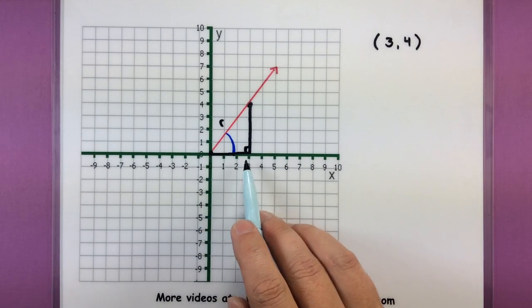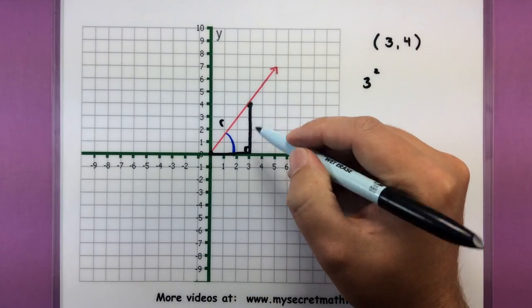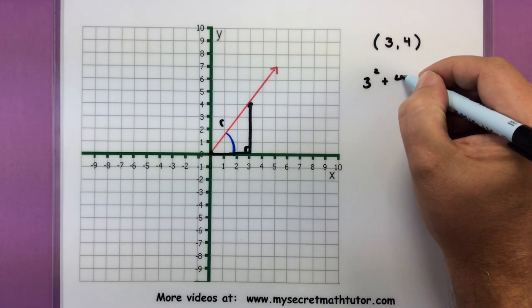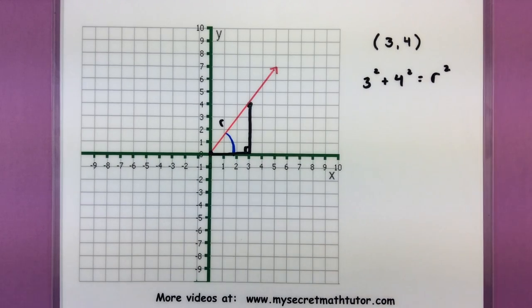We simply take our one side, this is a side of 3, so 3 squared, plus this side, 4 squared, and that should equal our hypotenuse, r squared.